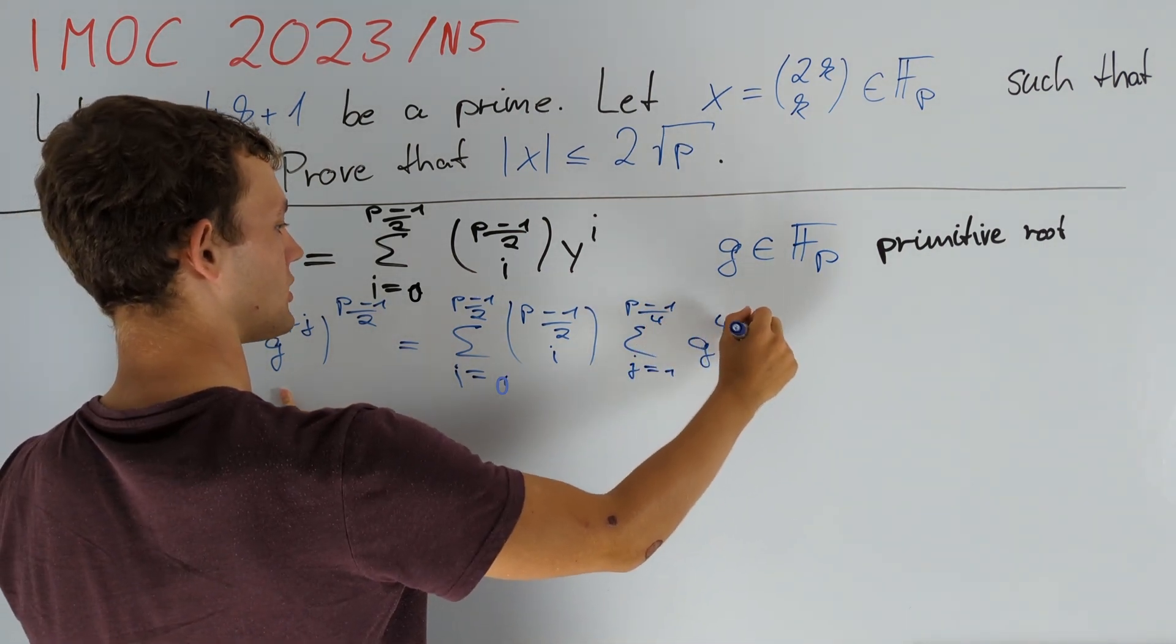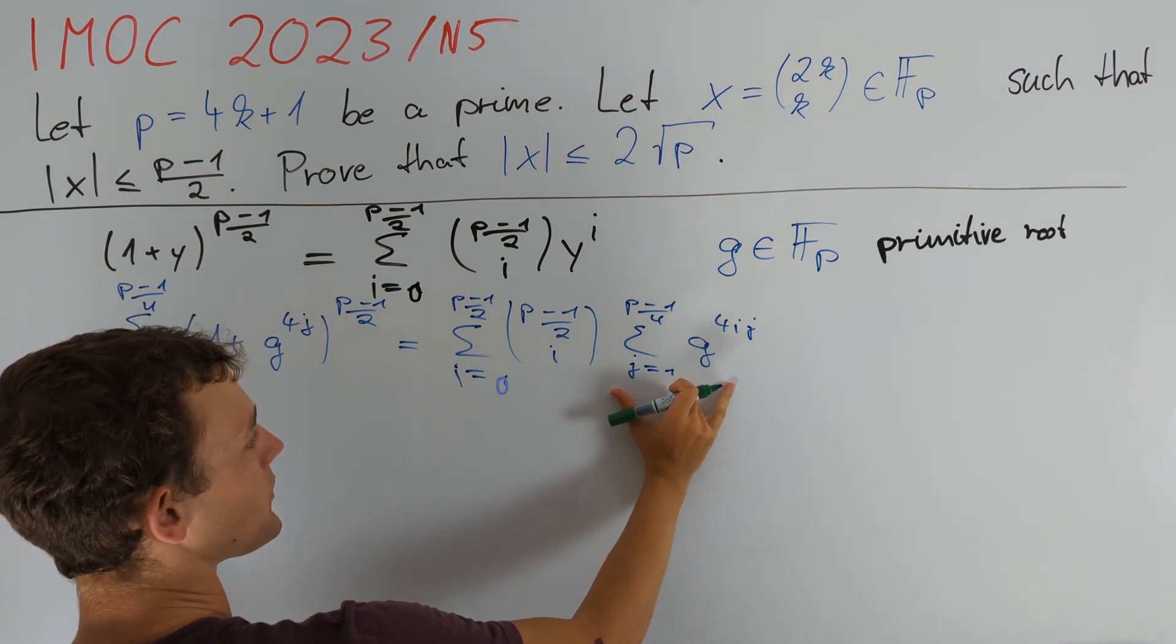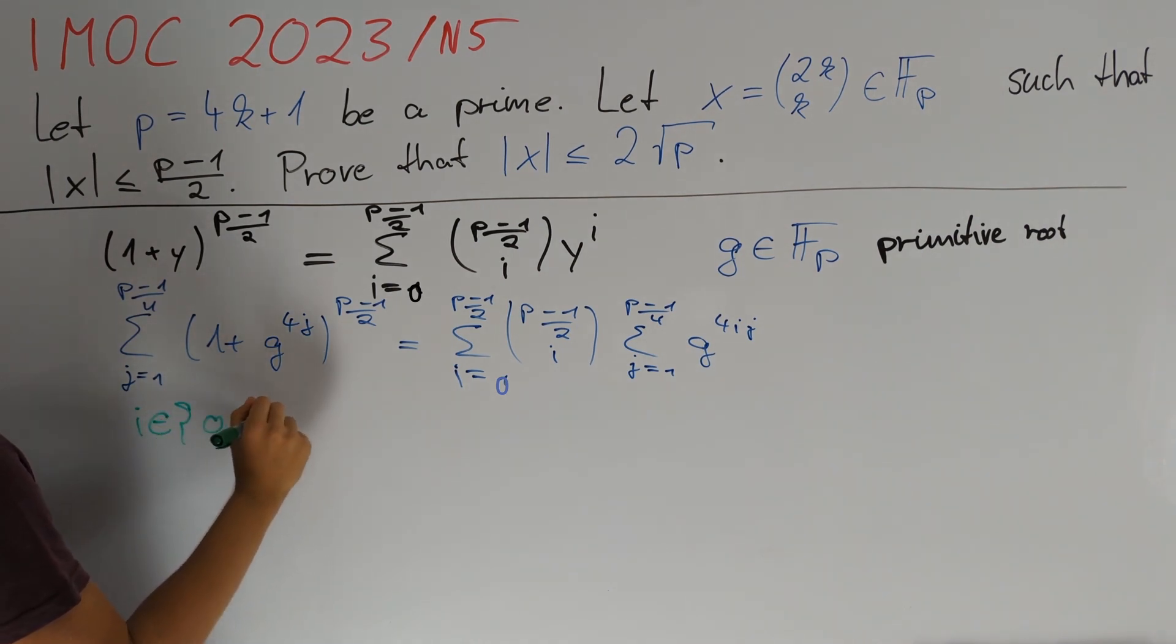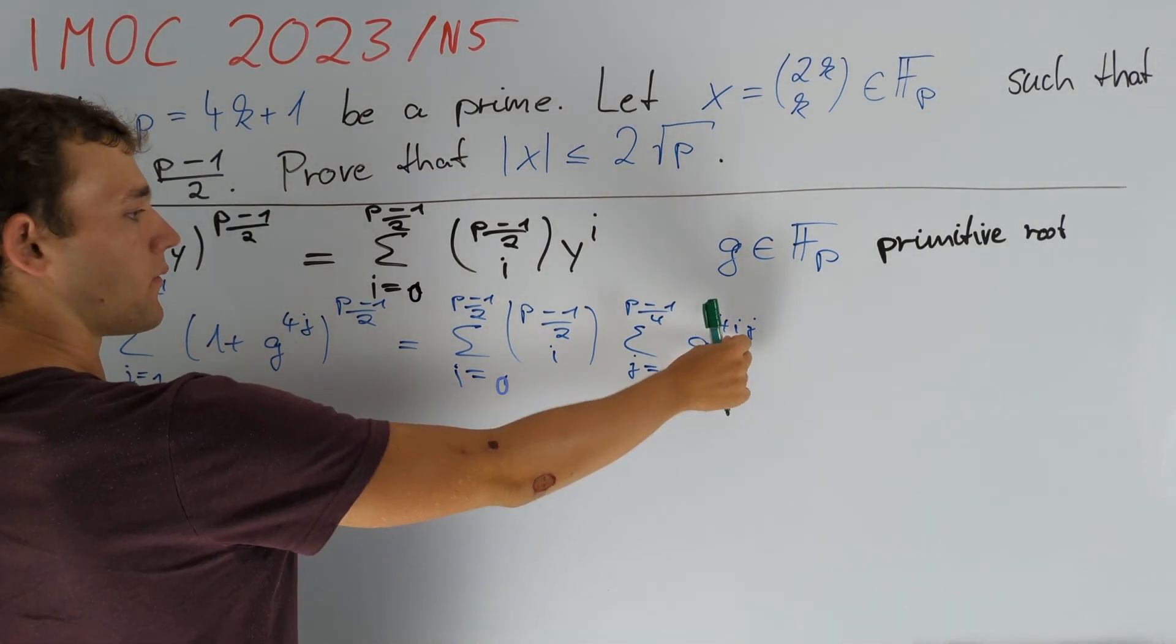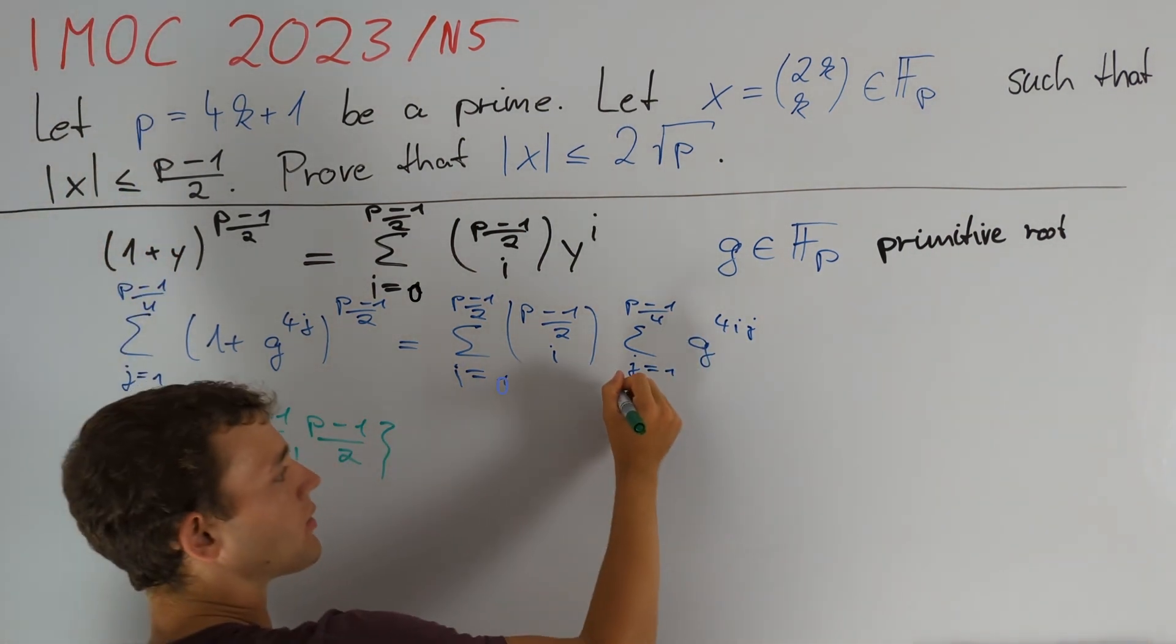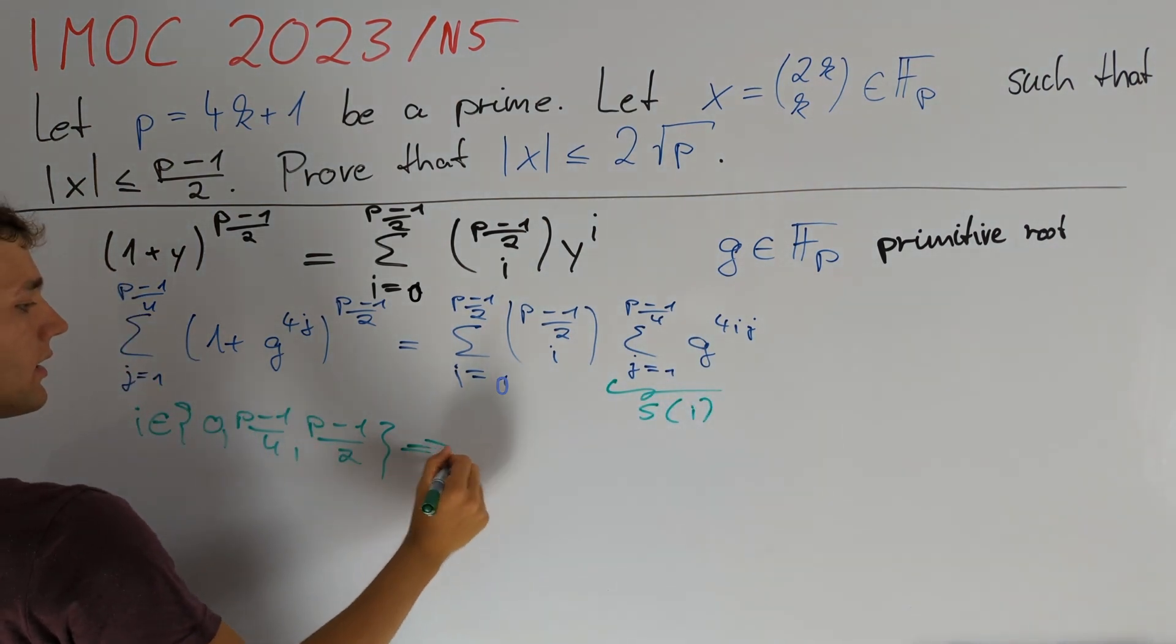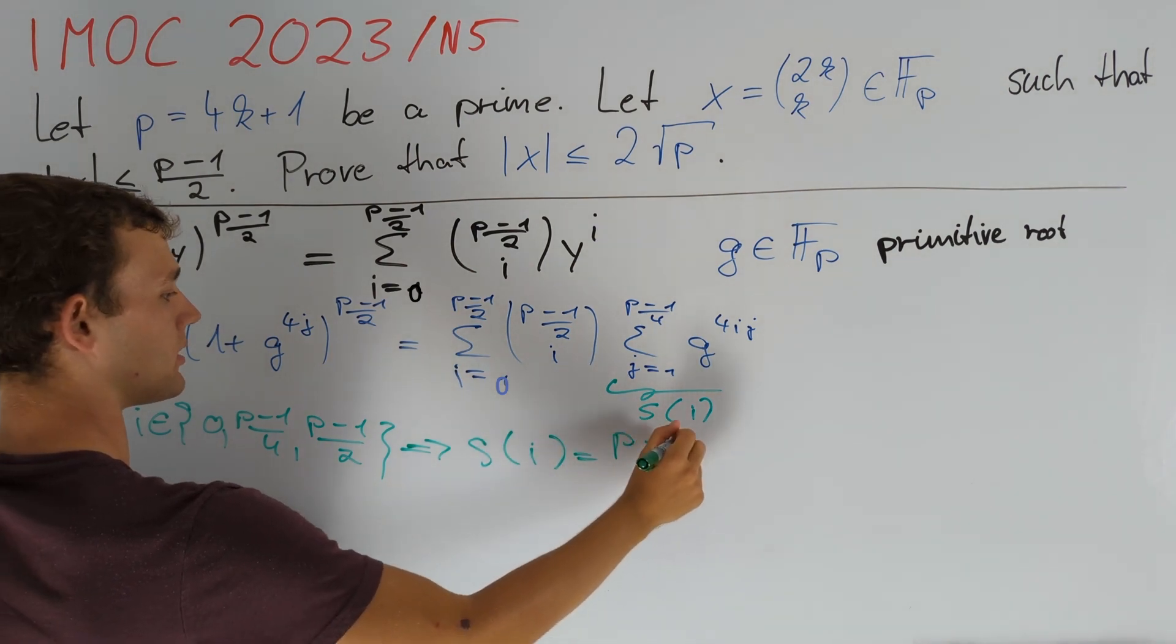Let's take a look at the value of this sum for different values of i. We see that if i is 0 or (p-1)/4 or (p-1)/2, then g^(4i) equals 1 in Fp and thus every single summand here is equal to 1, and therefore if we call this s(i) then in this case s(i) will equal (p-1)/4.